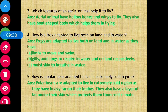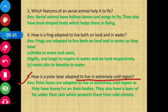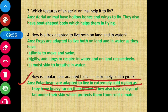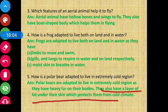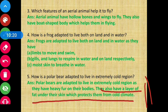Question number 5: how is a polar bear adapted to live in an extremely cold region? Polar bears are adapted to live in extremely cold regions as they have heavy fur on their bodies. They also have a layer of fat under their skin which protects them from the cold climate. Because of these two features, they are able to live in extremely cold regions.